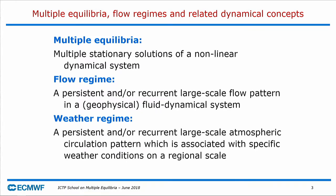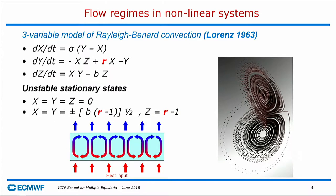In weather forecasting we often talk about transition from a zonal regime to a blocking regime. When you apply this concept of flow regimes to the weather, that is when we talk about weather regimes. Weather regimes are simply flow regimes in the real world, and the large-scale configuration of the flow determines the characteristics of the local weather.